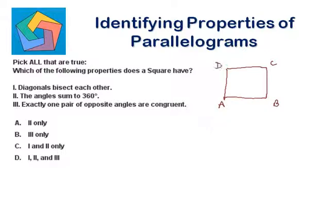All sides are congruent in a square, and all angles are 90 degrees. Diagonals bisect each other in a square, so yes, diagonals bisect each other. Next, angle sum is equal to 360 degrees — yes, because each angle is 90 degrees. There are four angles, so four times 90 is 360, meaning the angle sum is 360.